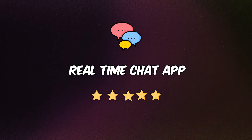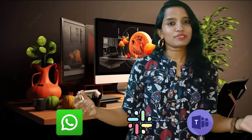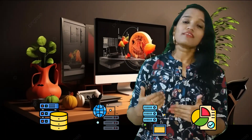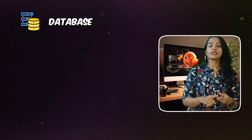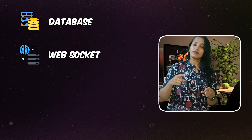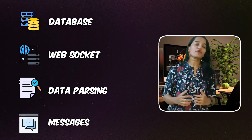At number eight: real-time chat application. You can see chat apps like WhatsApp, Slack, Teams, etc., but they have a lot of complex things going on. To build one, you need to first set up a database, then implement WebSocket communication, client-server communication, and finally a client to render the messages. This project requires complete full-stack development knowledge: database setup, WebSocket communication, data parsing, and a front-end to display messages.